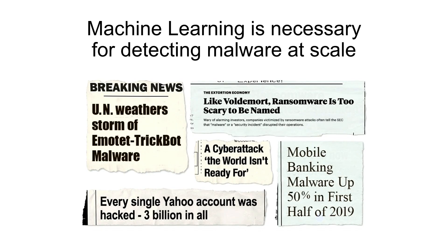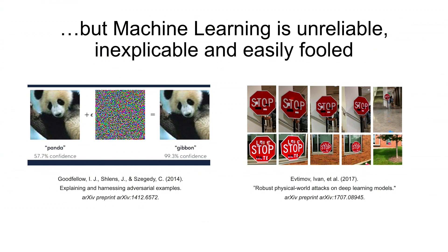If you want to detect any kind of malicious content at scale, machine learning is very useful. But machine learning has lots of problems — it's inexplicable, it can be easily fooled. And most importantly, machine learning is designed to solve the average case, whereas in security we are focused on detecting anomalies, things that rarely happen.